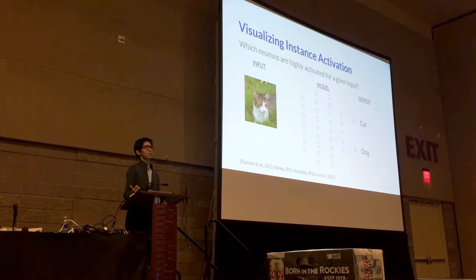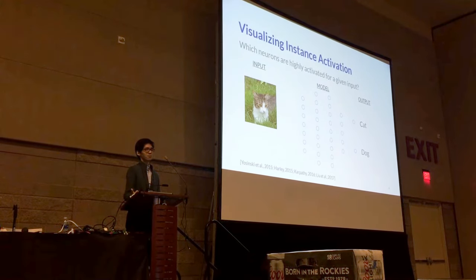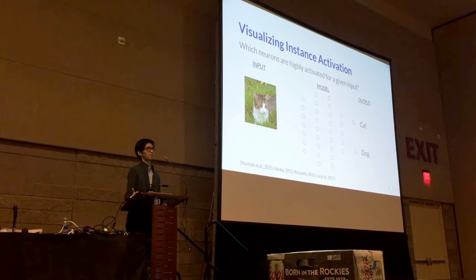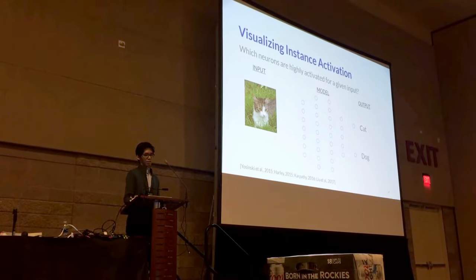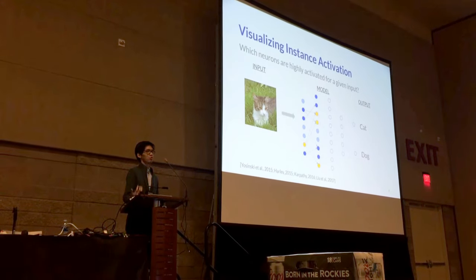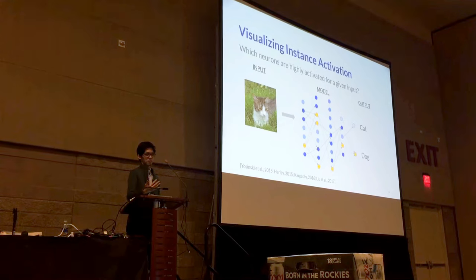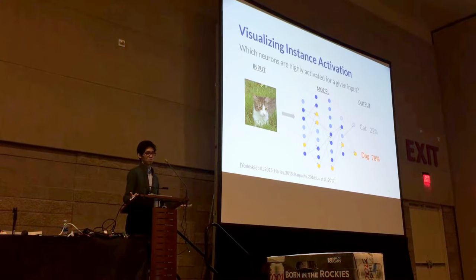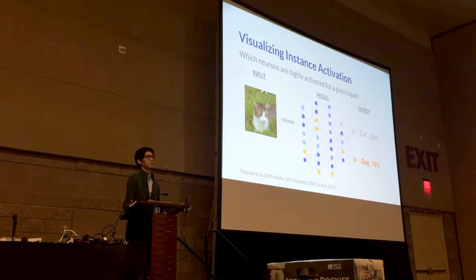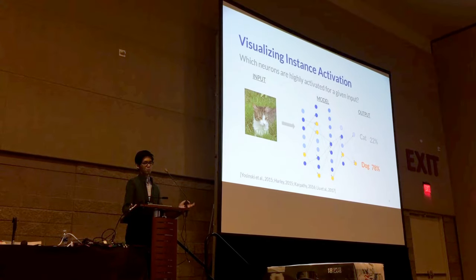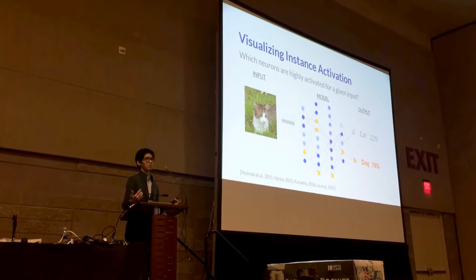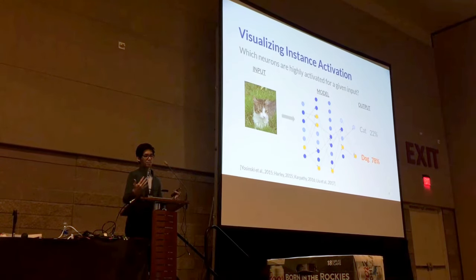Visualization has become a powerful tool for understanding and interpreting deep learning models, and we are seeing an increasing number of visualization results over the past couple of years. One popular approach is to show activations for a given instance. For a cat image, we can show which neurons are highly activated from input layers to hidden layers to output layers, allowing users to explore why the model makes a particular prediction.